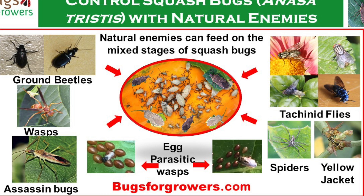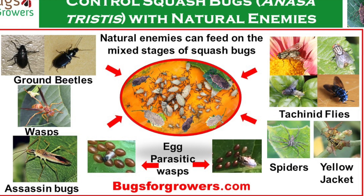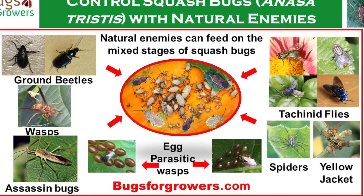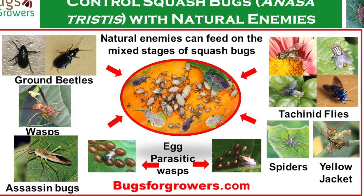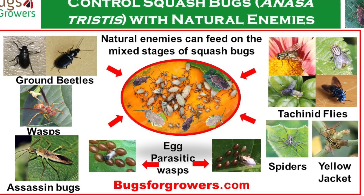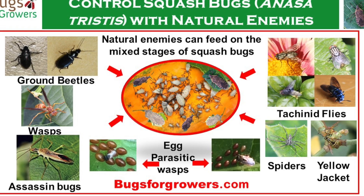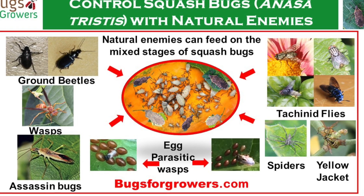Hello everyone, today we will discuss the role of natural enemies like predators, parasitoids and pathogens in controlling squash bugs, a major pest of cucurbit crops.